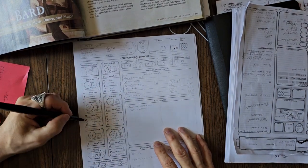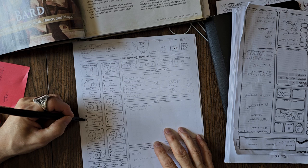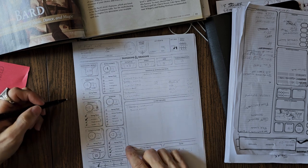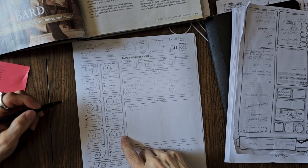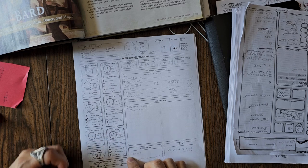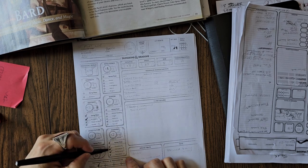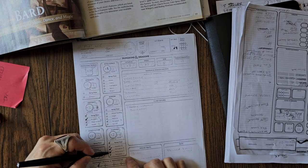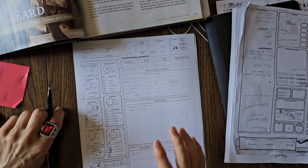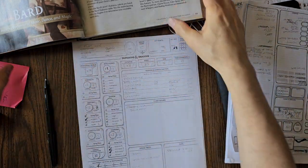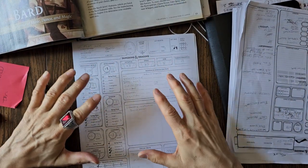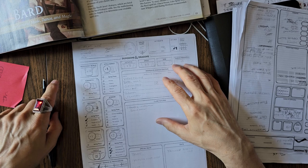For bard, I picked under Dexterity: Acrobatics. Of course we're going to have Charisma as our primary statistic, so I picked Intimidation and Performance. I did that because what I'm going to build here is the Dance Bard. When we get to level three, the subclass is going to be Dance.